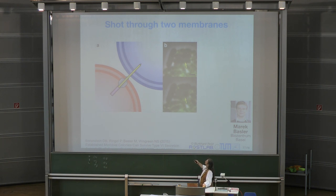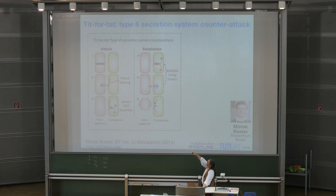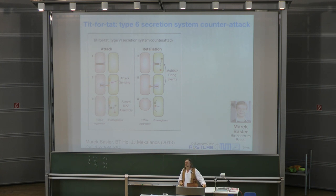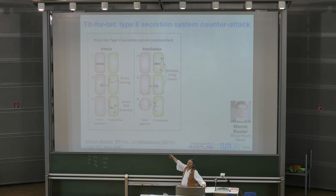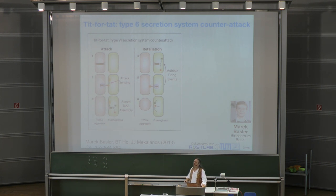Now, assume you have an attacker and an attacked cell. What does the attacked cell do? It shoots back at exactly the same position. The green attacked cell shoots back — that's the idea, trying to kill in the same way. Now imagine the green cell runs out of bullets — what does the bacterium do? Just like in Westerns when someone ran out of bullets: you run, or you improvise.